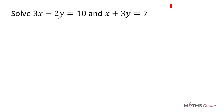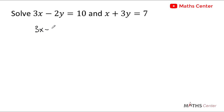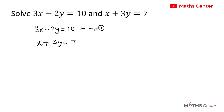Solve 3x minus 2y is equal to 10 and x plus 3y is equal to 7. These are two linear equations with two variables and so we will solve them simultaneously for the values of x and y. The first one is 3x minus 2y is equal to 10 and the second one is x plus 3y is equal to 7. I'll call the first one equation 1 and the second one equation 2.